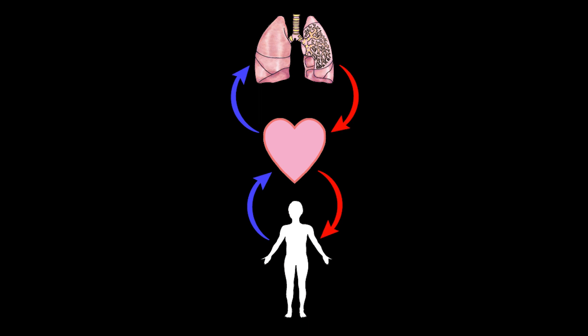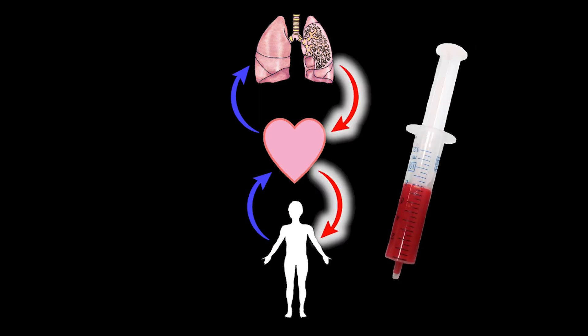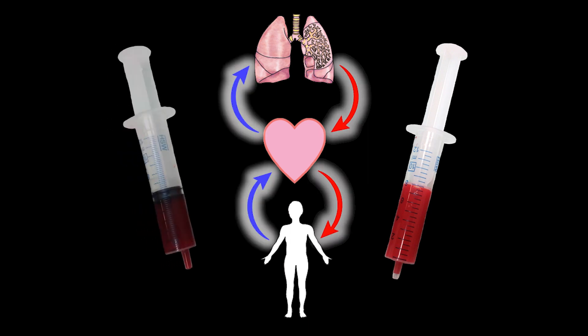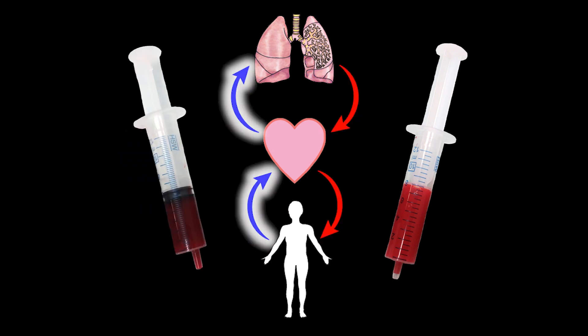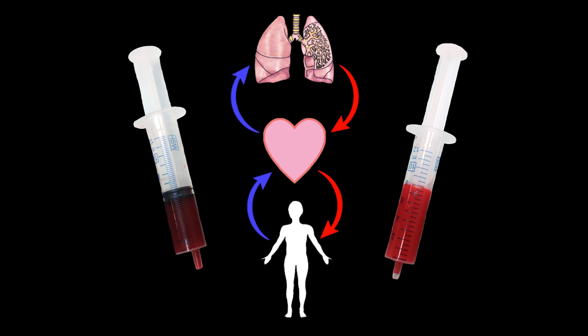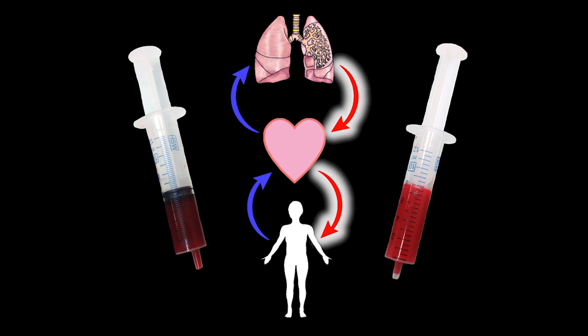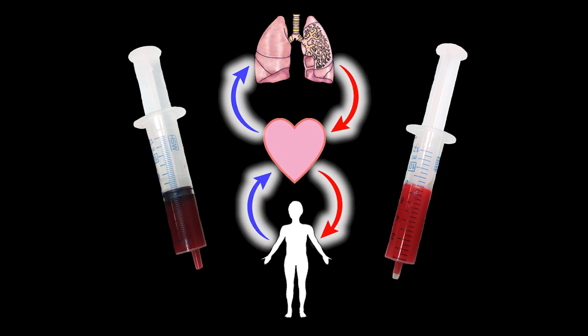Do we really have blue blood? Let's take a look. On the right is a syringe with oxygenated blood, and on the left is a syringe with deoxygenated blood. The deoxygenated blood is — well, it's not blue, but it is a darker shade of red. Some people might appear to have blue veins in their wrists and legs, but this is because of the way light is absorbed and reflected by the skin, not actually by the color of the blood. Even though in real life all human blood is red, we usually color blood vessels as red or blue in diagrams just to make them easier to interpret.